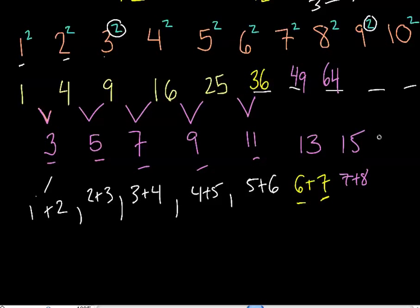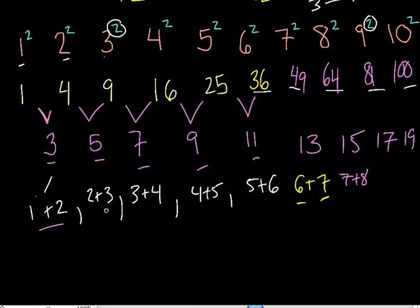Then I add seventeen and then nineteen, and I get eighty-one and one hundred. A neat little trick — the square numbers are all connected by these differences.